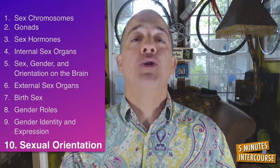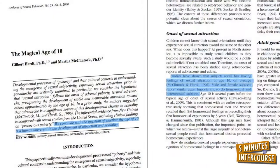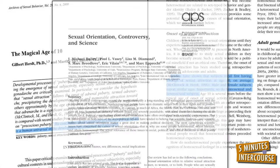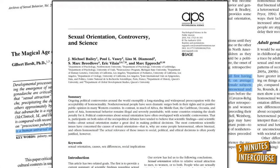Ingredient number ten: sexual orientation. By age ten, sex hormones are having their greatest postnatal organizational effects on the brain. Children are forming 'my girlfriend' and 'my boyfriend' relationships and examining their own and others' sexual orientations. What's your sexual orientation? Are you sure?